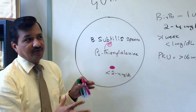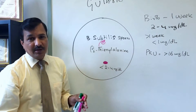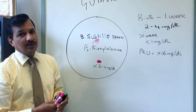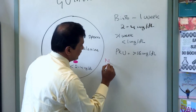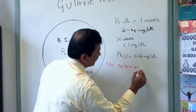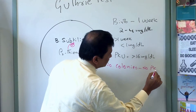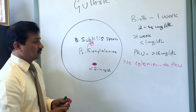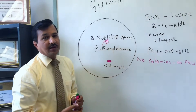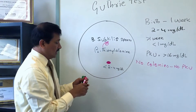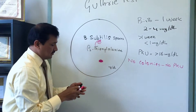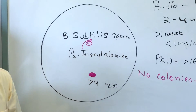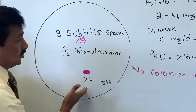No colonies means the baby is normal — the phenylalanine concentration in the blood is fine and the baby does not have phenylketonuria. No colonies equals no PKU. Now, if the baby has phenylketonuria, the phenylalanine concentration will be more than sixteen milligrams per deciliter, so the blood phenylalanine level will be more than four milligrams per deciliter.